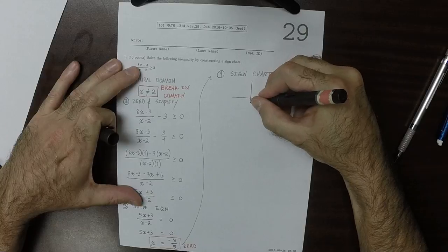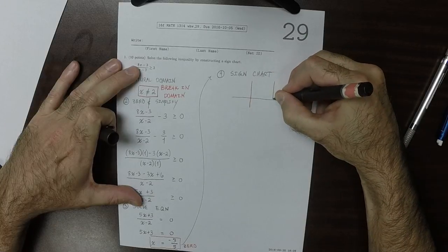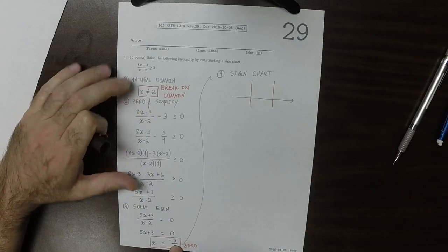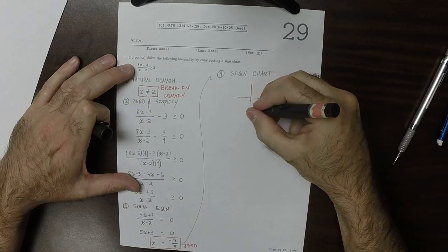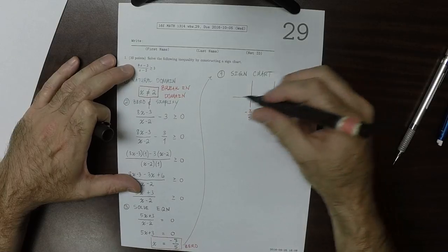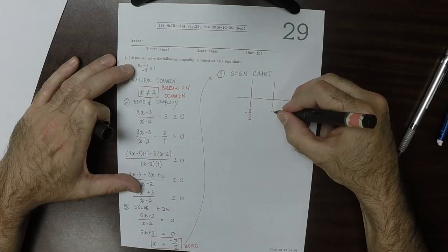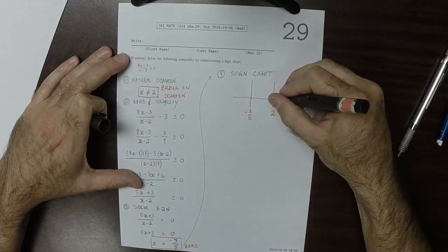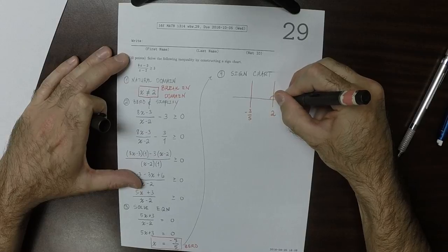So there was two of them. So here's 1, 2. I'm going to take care to plot them in the correct order. So this one is more negative than that one. So here is negative 3 fifths, and here is positive 2.